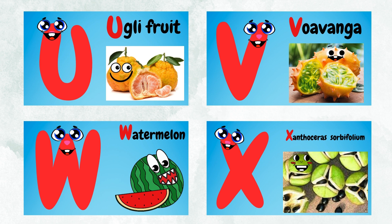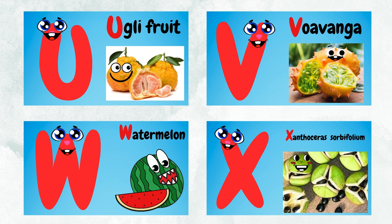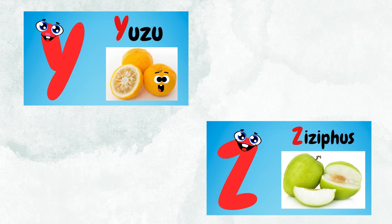V for uvanga, W for watermelon, X for xango, Y for yaris, Z for hueso, Z for ziziphus.